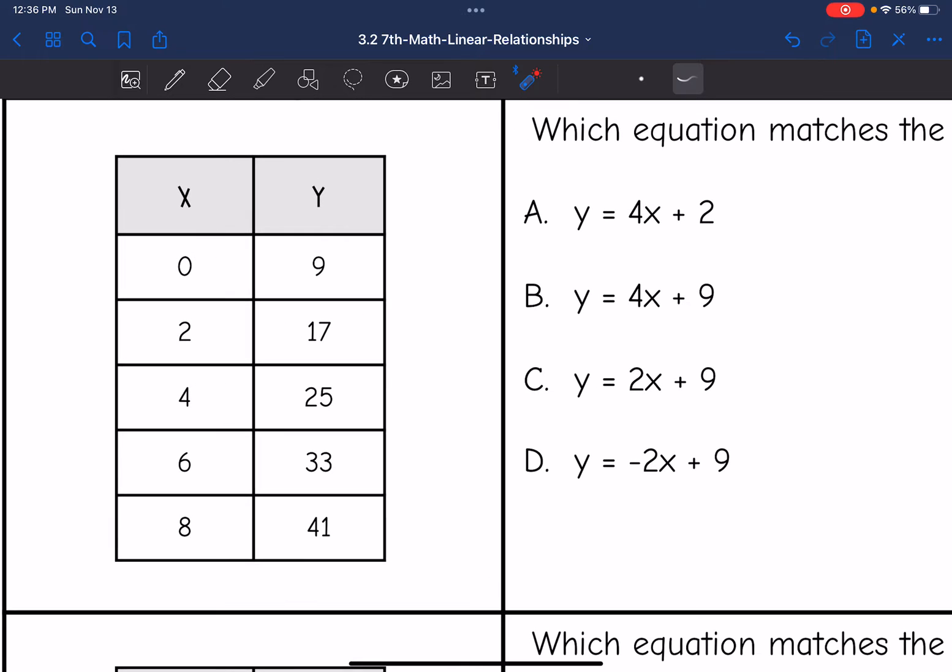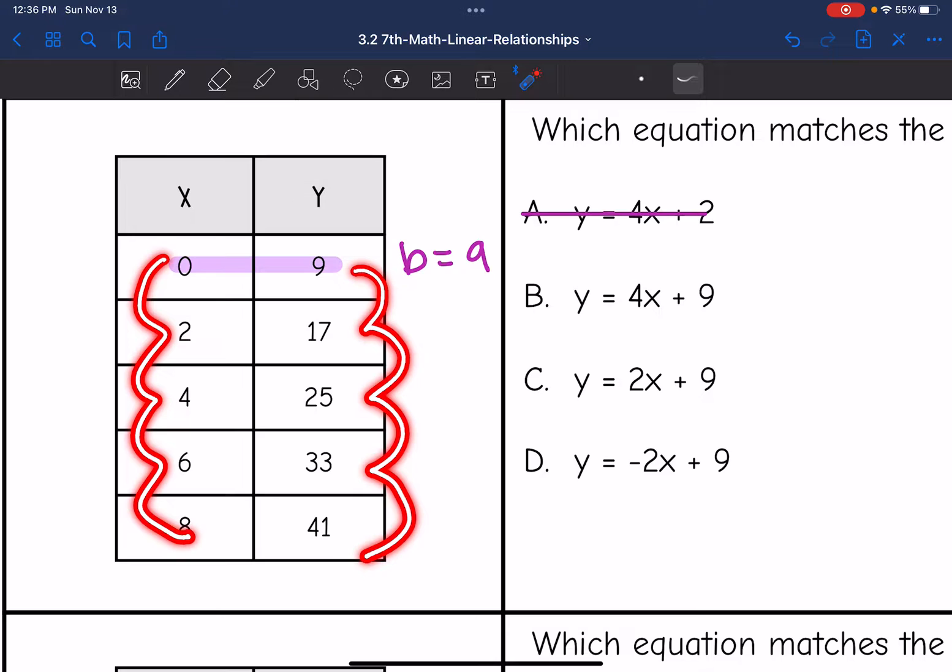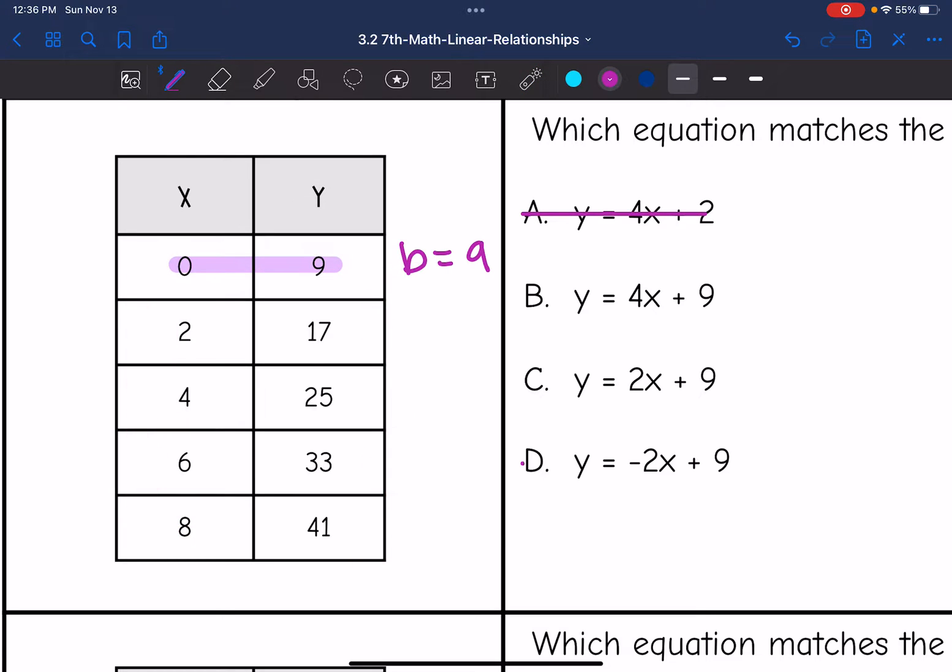So let's look at this first table right here. I can see that my b value is going to be 9, because remember the b value is where x is 0. So looking at these equations, I can already eliminate A because it does not have a b value of 9, like the other equations do. Now this one has a rate of change of 4, this one 2, and this one negative 2. So let's see if my table is increasing or decreasing. We are increasing as the x values are increasing, so I can also eliminate D because the rate of change is not negative, we are increasing.